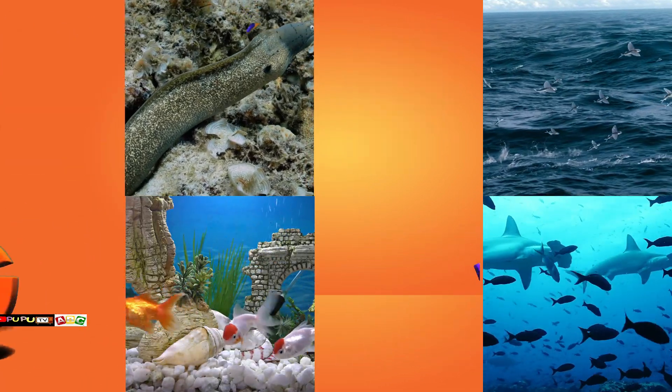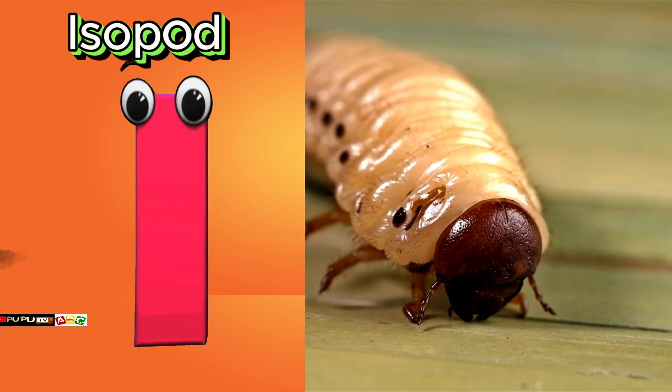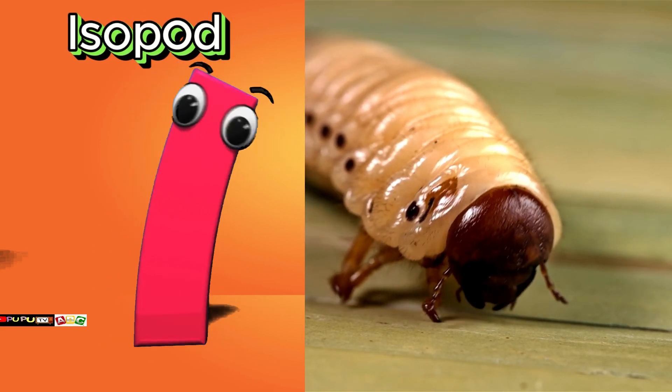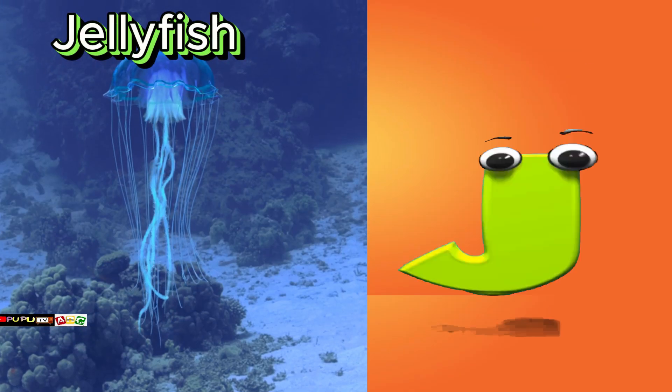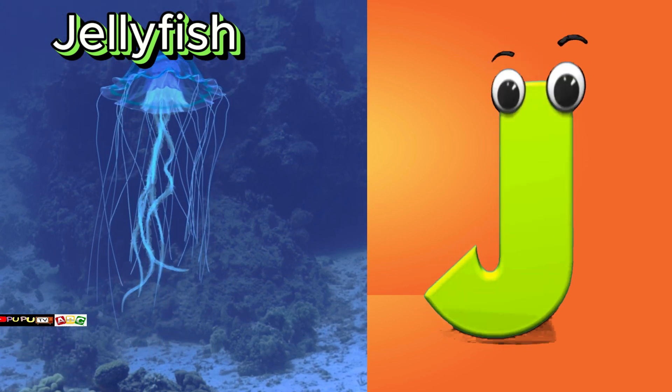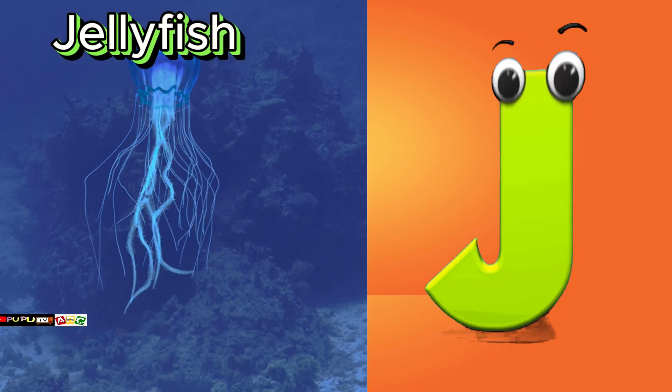I is for isopod. Eh, eh, isopod. J is for jellyfish. Juh, juh, jellyfish.